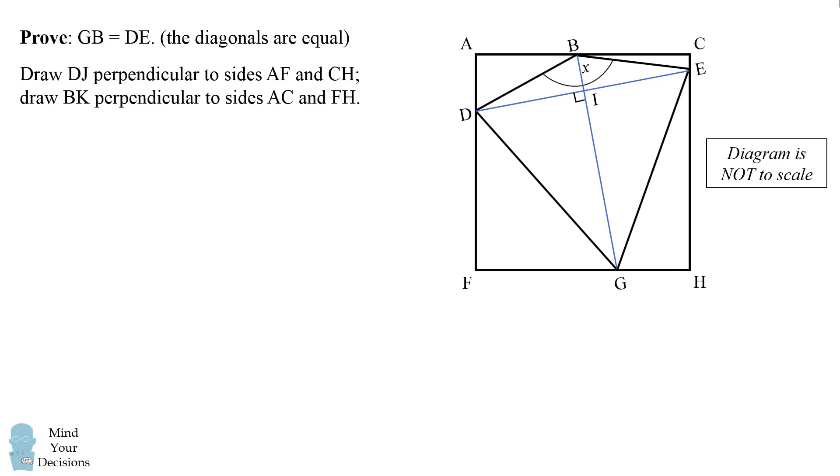We'll draw DJ perpendicular to sides AF and CH. And we'll also draw BK that's perpendicular to sides AC and FH. Now we have two triangles that we will show are congruent by angle side angle. EJD is congruent to GKB by angle side angle. So why are these triangles congruent to each other?